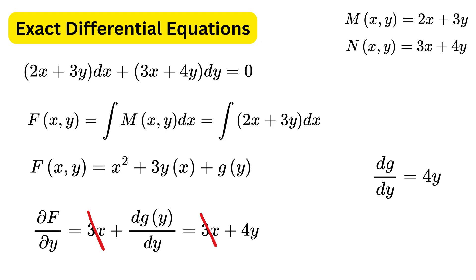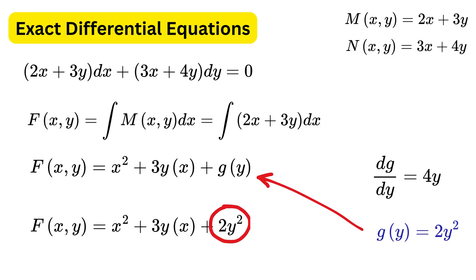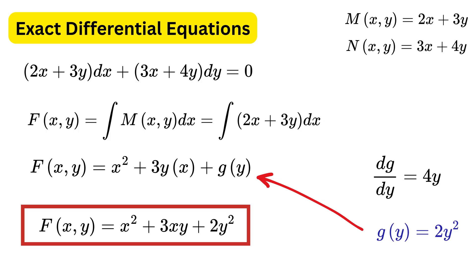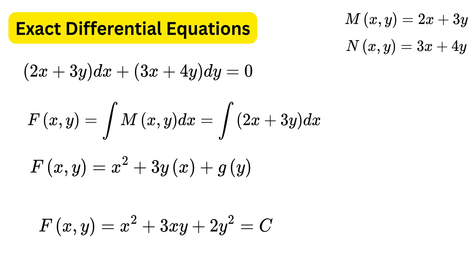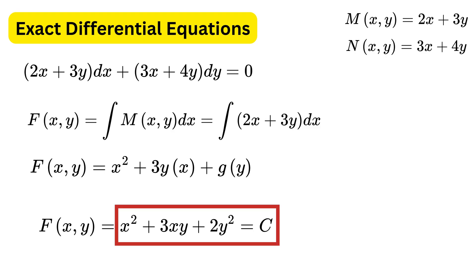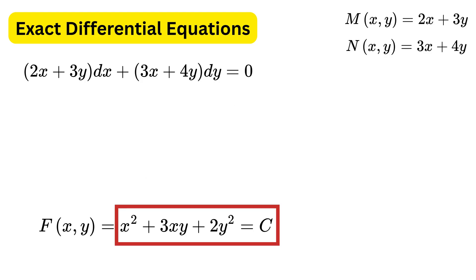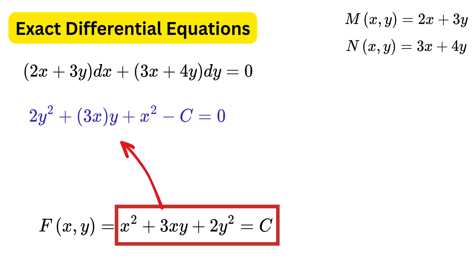Setting the partial derivative of f with respect to y equal to N, the 3x terms cancel and we get dg/dy equals something simple, giving g(y) equals 2y squared. Substituting back, f(x,y) equals x squared plus 3yx plus 2y squared, and this equals some constant c. We have found an implicit relationship between y and x. You can leave it in this form or solve for y by treating it as a quadratic equation in y.